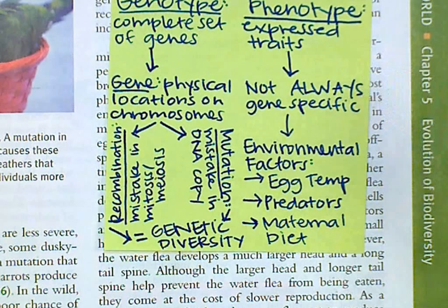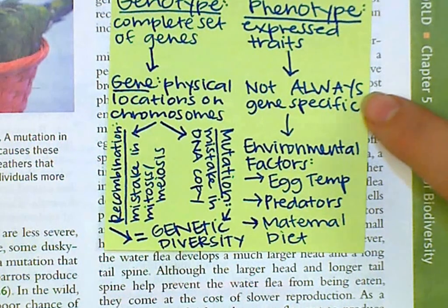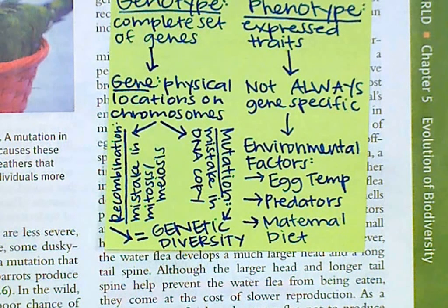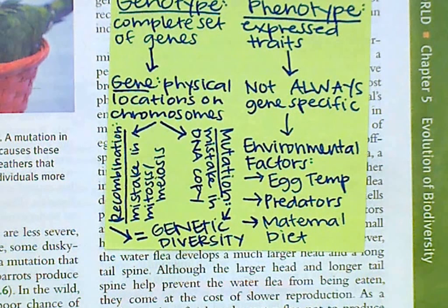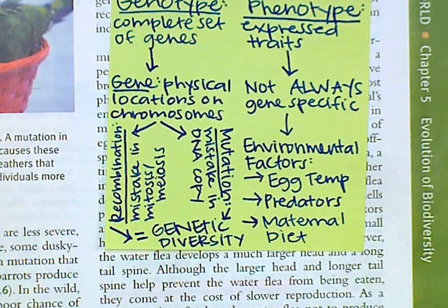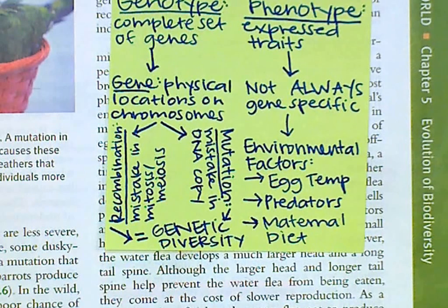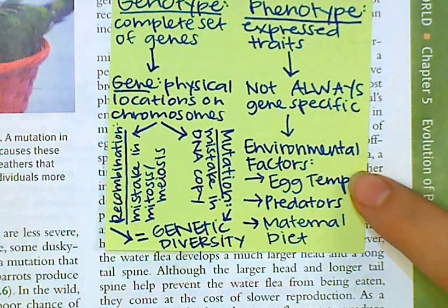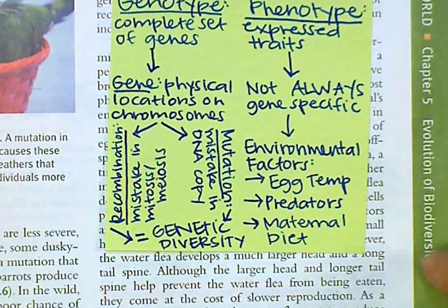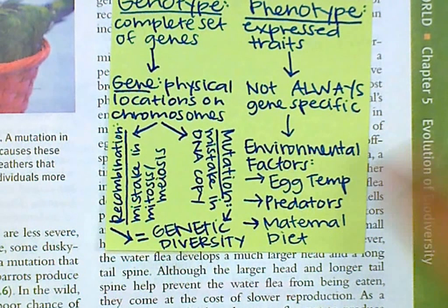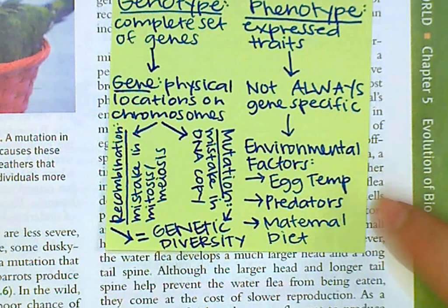Next we have phenotype, which is our expressed traits. They're not always gene specific. Remember when you did Punnett squares? You had the big B and the little B — your genotype has big B, little B, but your phenotype is going to be like blue eyes or brown eyes or whatever that big B stood for. There are also environmental factors that can change the phenotypes of different organisms, such as egg temperature of different organisms that lay eggs.